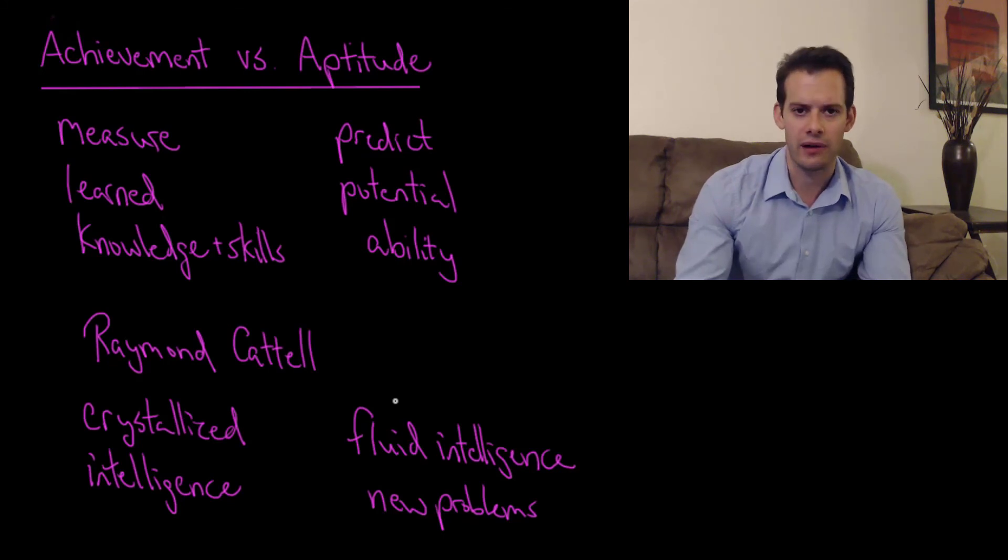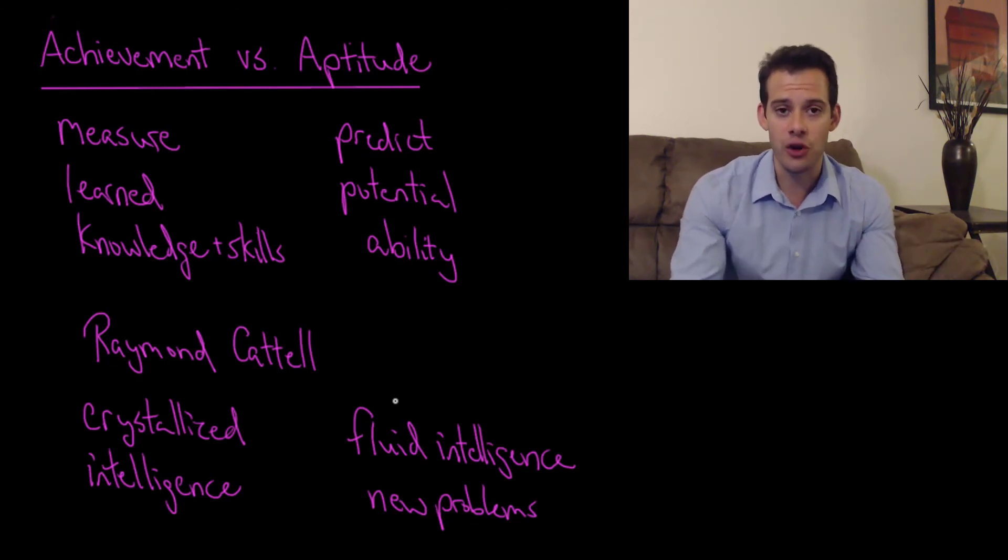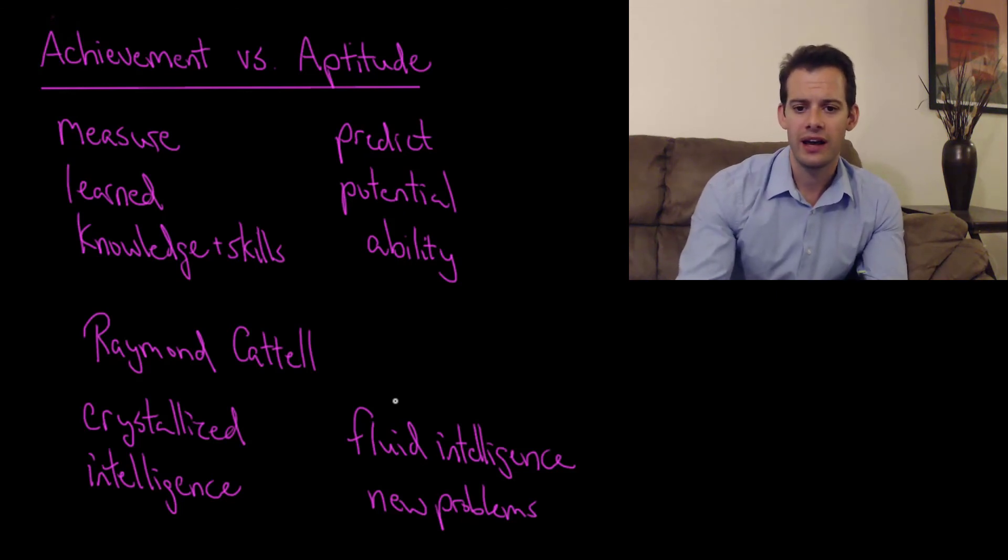And part of the reason that it doesn't seem this way is that their crystallized intelligence continues to accumulate. And this essentially compensates for the decrease in fluid intelligence that occurs. Because they're still accumulating new skills, they're acquiring new knowledge that they can use, even though they might not be able to solve new problems as quickly as they could when they were in their 20s.